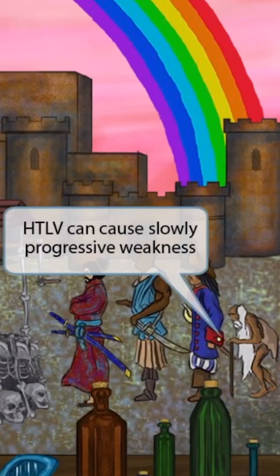Next, notice that we've shown an old guy with a cane in the back of the line. This guy should help you remember that HTLV can cause slowly progressive weakness. The use of a cane implies that the person is weak, so old guy with a cane for slowly progressive weakness.